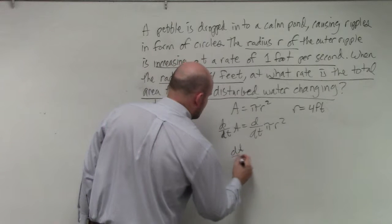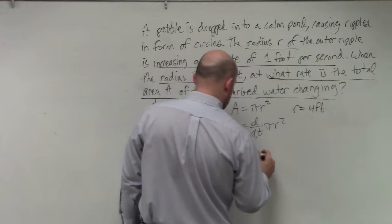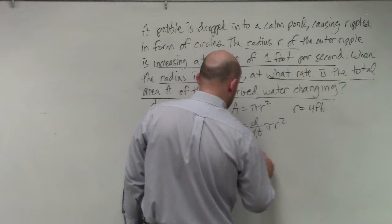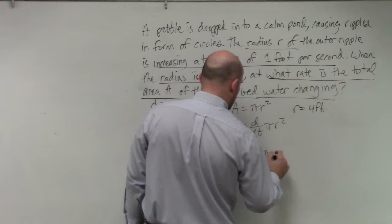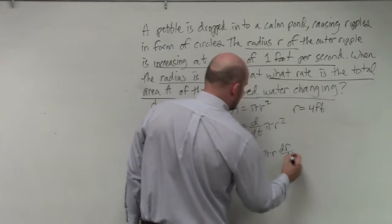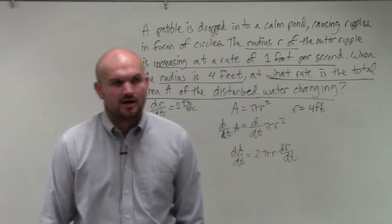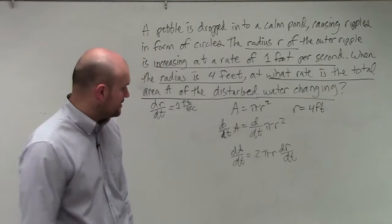So I get dA/dt equals - let's see, you're going to have 2πr dr/dt. So it's π times 2r, I just put the 2πr, because the two constants I put in front.